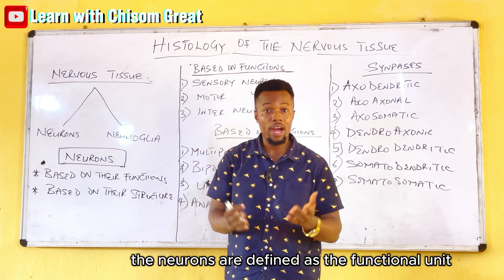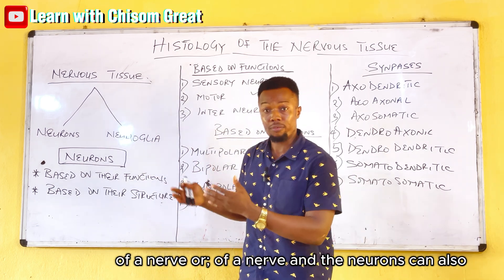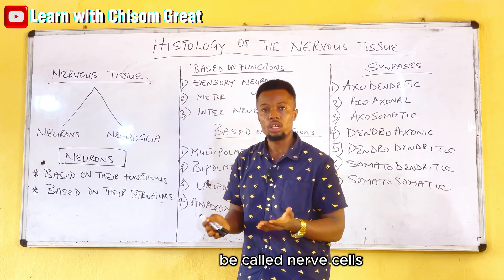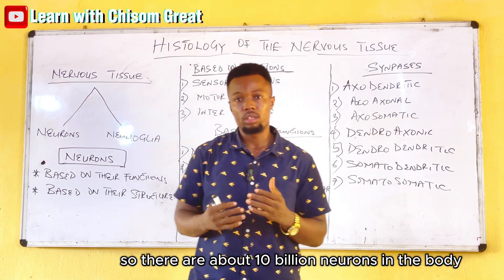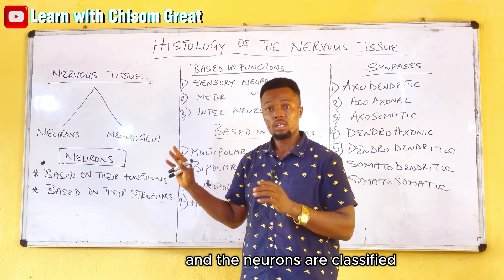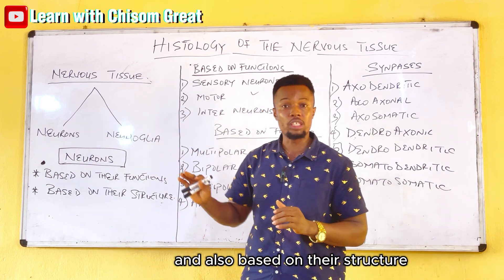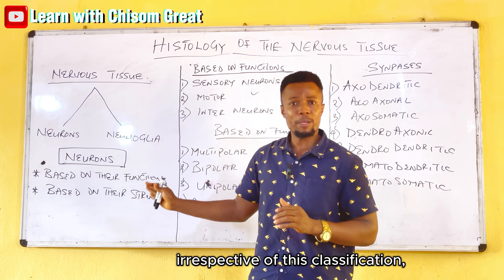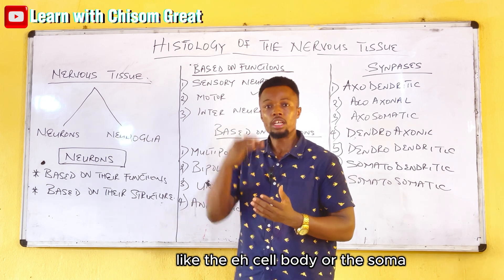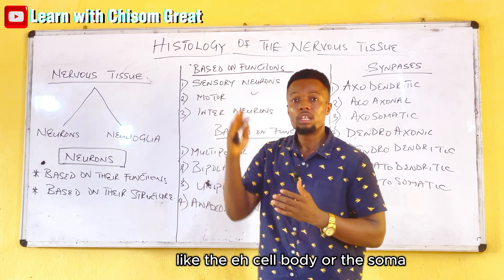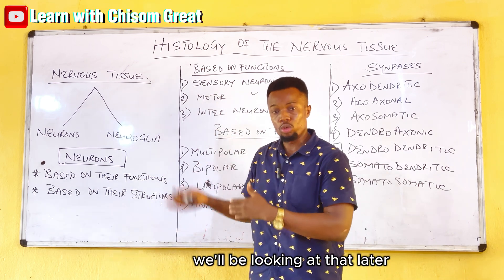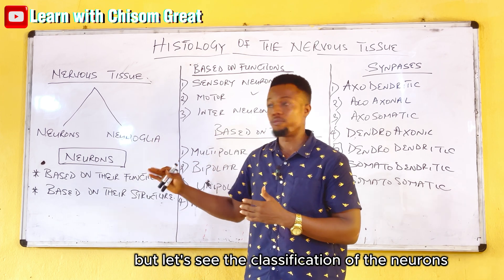The neurons are defined as the functional units of a nerve and can also be called the nerve cells. There are about 10 billion neurons in the body. Neurons are classified based on their function and also based on their structure. Irrespective of this classification, neurons have similar features like the cell body or soma, the dendrites, and also the axon.